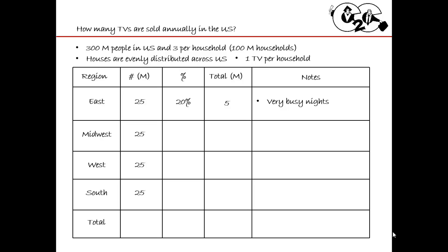For the Midwest, I have 25 million households again. People there are probably more focused on home goods and maybe have less to do, so I'll say 60% are buying TVs. That works out to 15 million. A useful trick: instead of multiplying 60 times 25 from scratch, notice that 60 is three times 20. Since 20% gave me 5, I just multiply by three to get 15. Look for shortcuts to make your math easier.